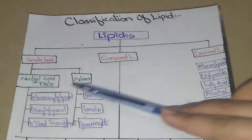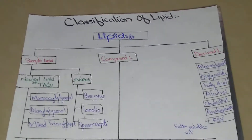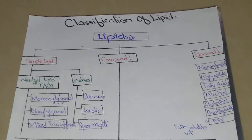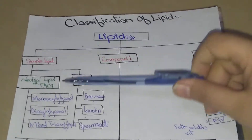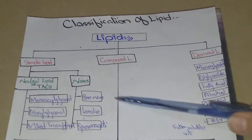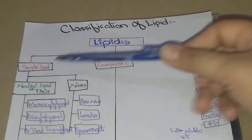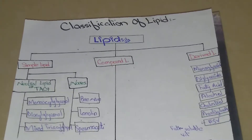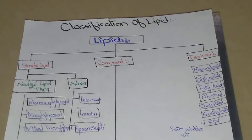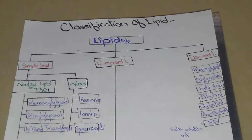Neutral lipid further divides into three types on the basis of glycerol: monoacylglycerol, which contains only one glycerol molecule; diacylglycerol, which contains two; and mixed triacylglycerol. These are the three types of neutral lipid or triacylglycerol. Wax is further divided into three types: beeswax, lanolin, and spermaceti.